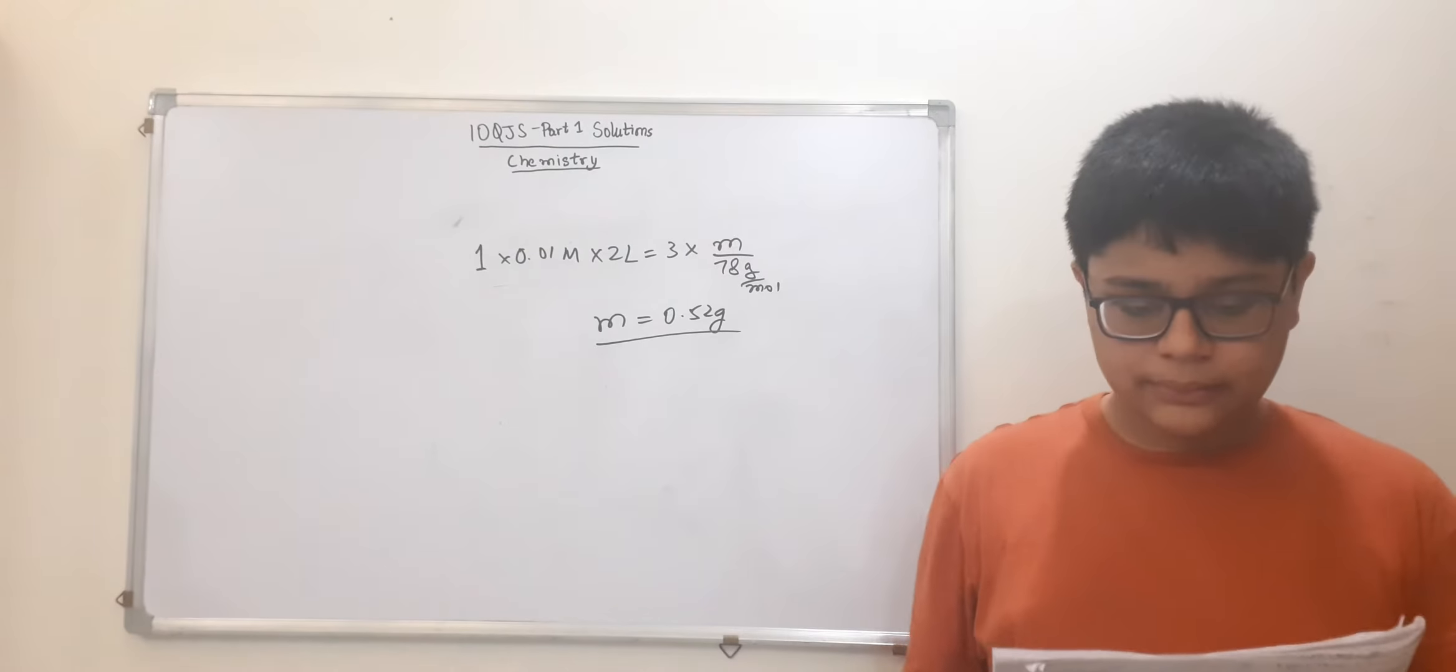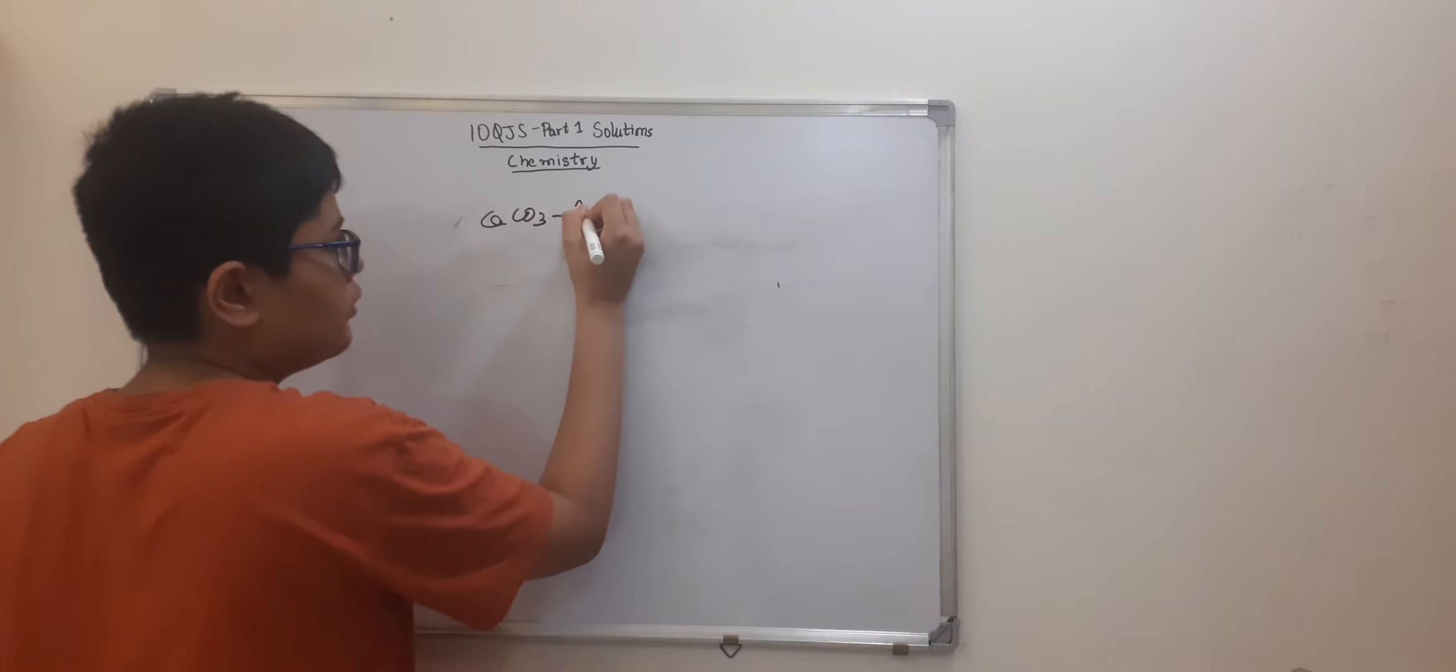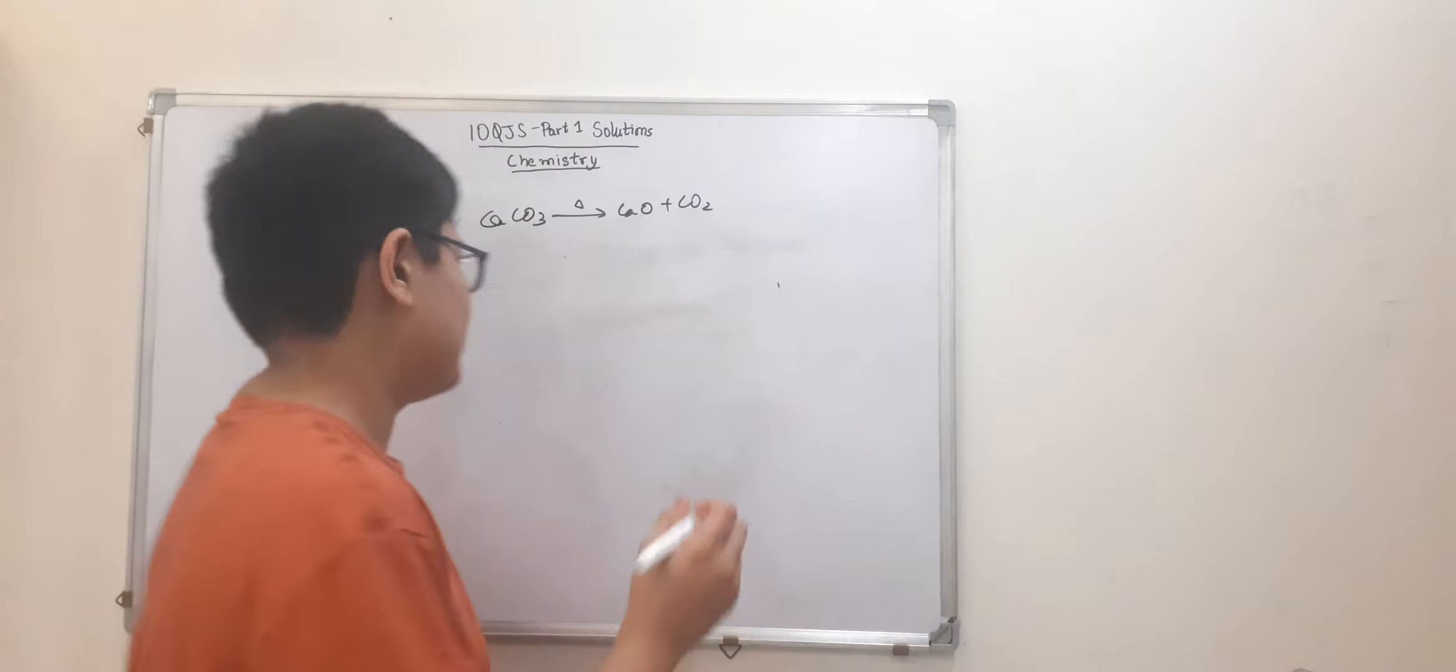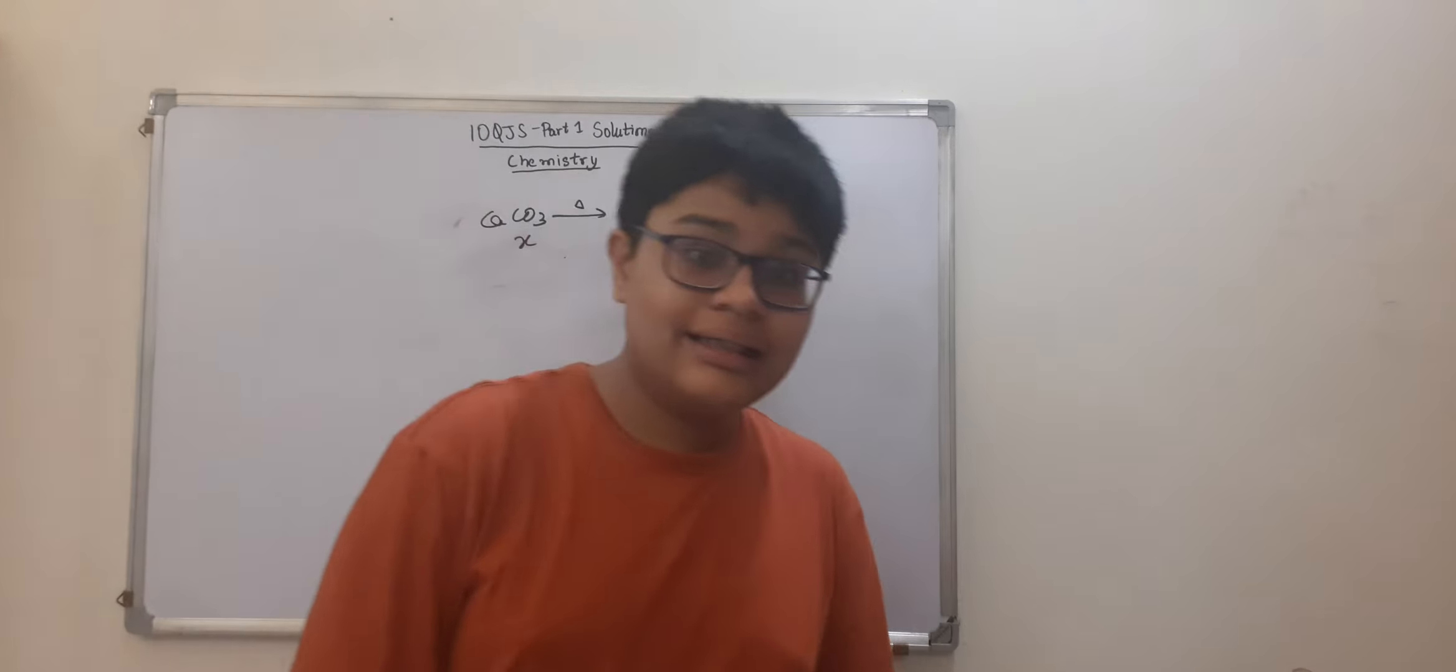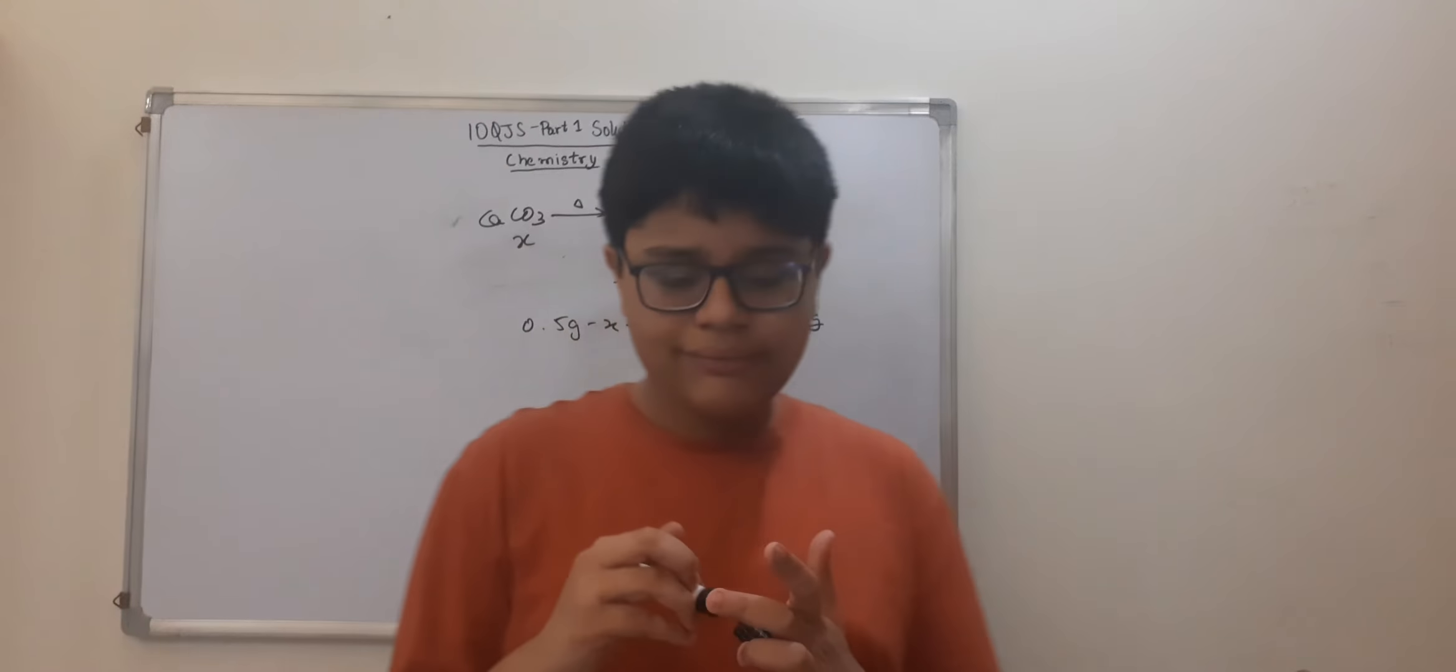Next question. A 0.5 gram mixture of calcium carbonate and calcium oxide. So basically the initial mass is given as 0.5 gram. And then when you heat calcium carbonate, you will get calcium oxide and CO2. So CaCO3 on heating gives CaO and CO2 which is a non-combustible gas. Now suppose the mass of CaCO3 is X. Then this will be 56X by 100 and this will be 44X by 100. Then the mass of CaO in the initial mixture will be 0.5 gram minus X plus 56X by 100 which is from the reaction will be the total mixture that is 0.434 gram.